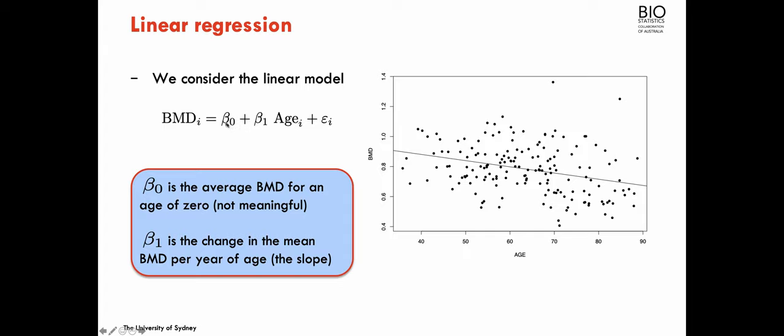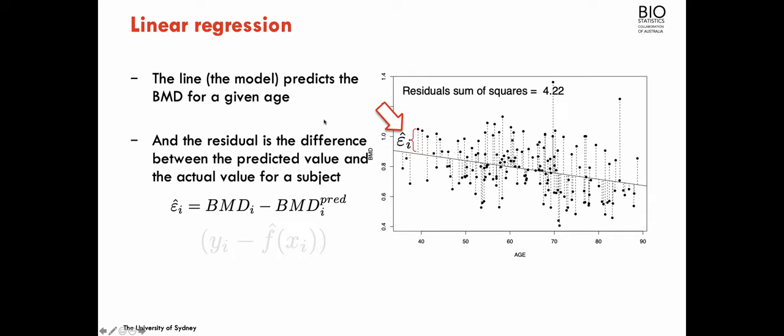And I'm sure you are aware that β₀ would be the average BMD for someone with age zero, which is not really meaningful. And β₁ is the increase in the average BMD per age, so the slope of this line. And then the error term that really expresses the difference between the observation to what is predicted by the model, which is given by this point. And I'll show you this in the next slide.